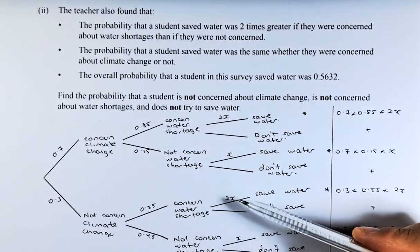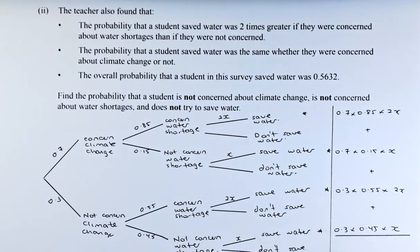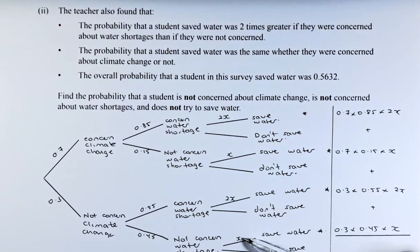Similarly, if they are concerned about water shortages, it's 2x the probability, and if they are not concerned, it's going to be half of it which is x.